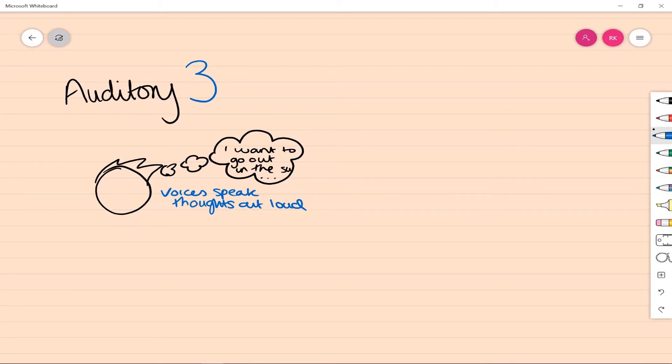The next one that we think about is the more classically considered. This is when there are third person voices which feels as if the voices are discussing the person. They might be talking to each other, they might be talking to the person, but it feels as if they're talking about them.